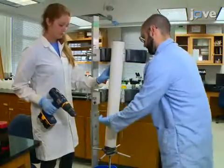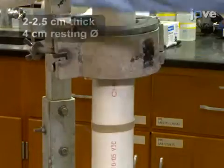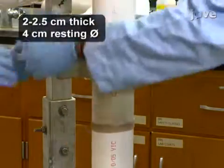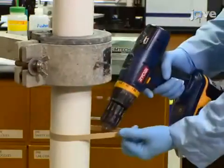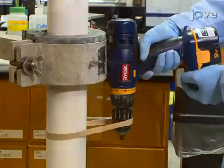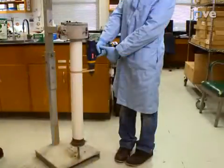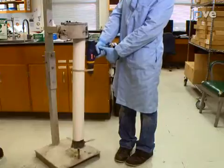After all the samples are collected, reset the extruder. Place a rubber band around the piston near its base for the most stability. Then stretch the rubber band around the head of a drill. Now rotate the piston using a low drill speed until it reaches the desired height above the base of the extruder.